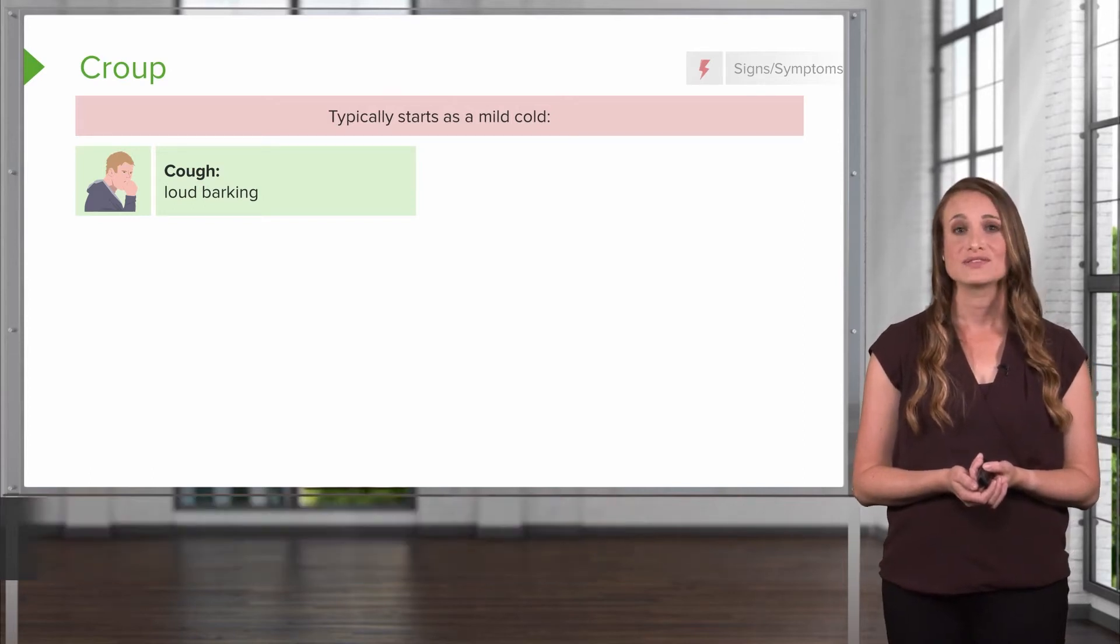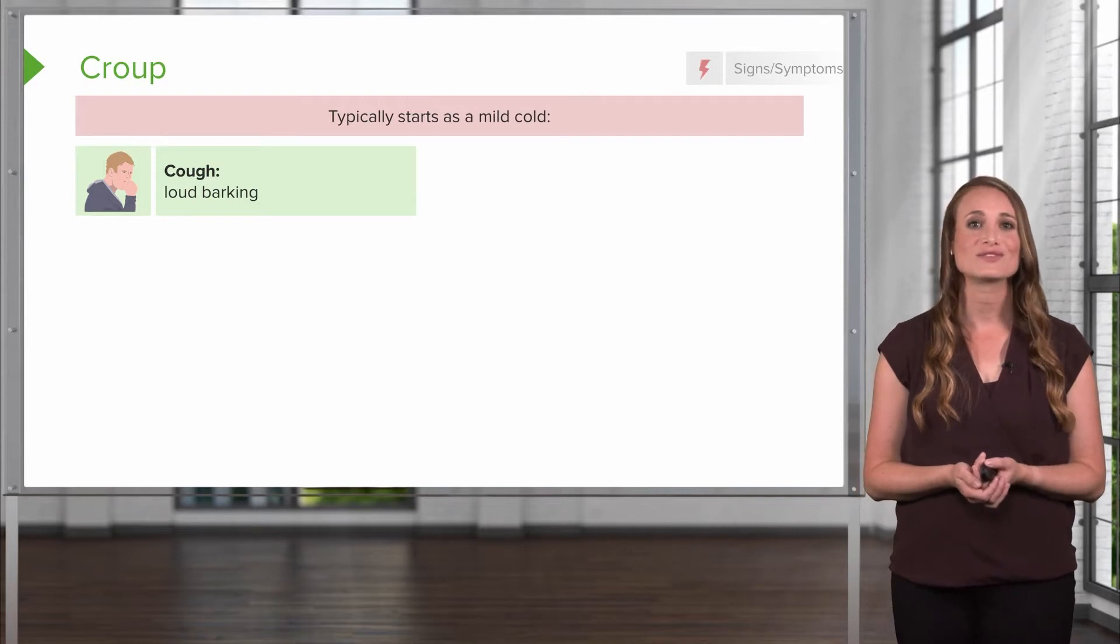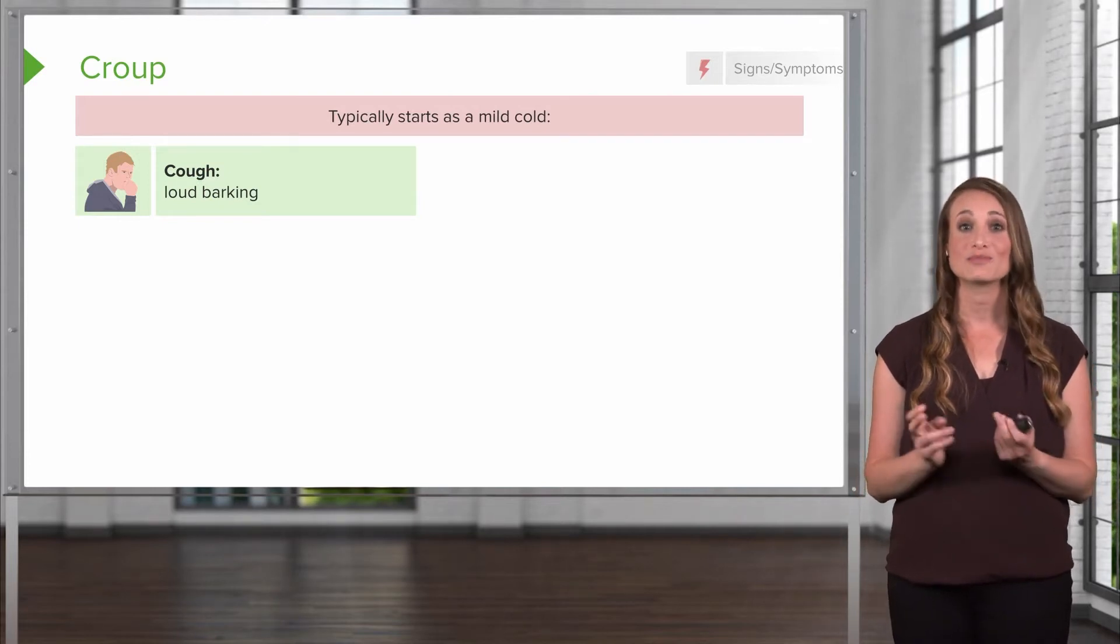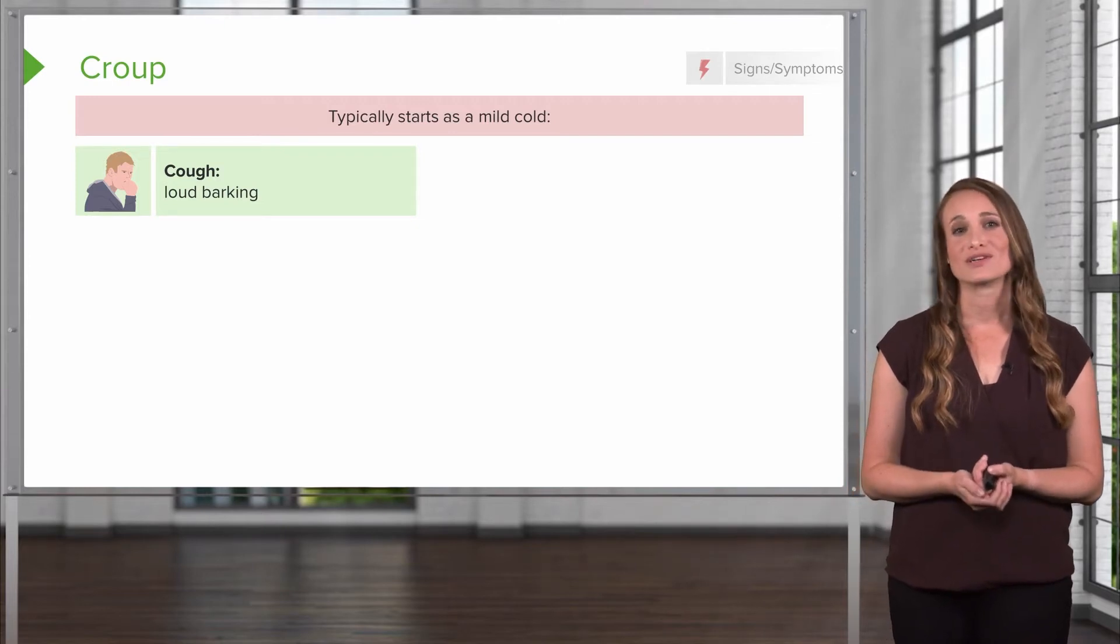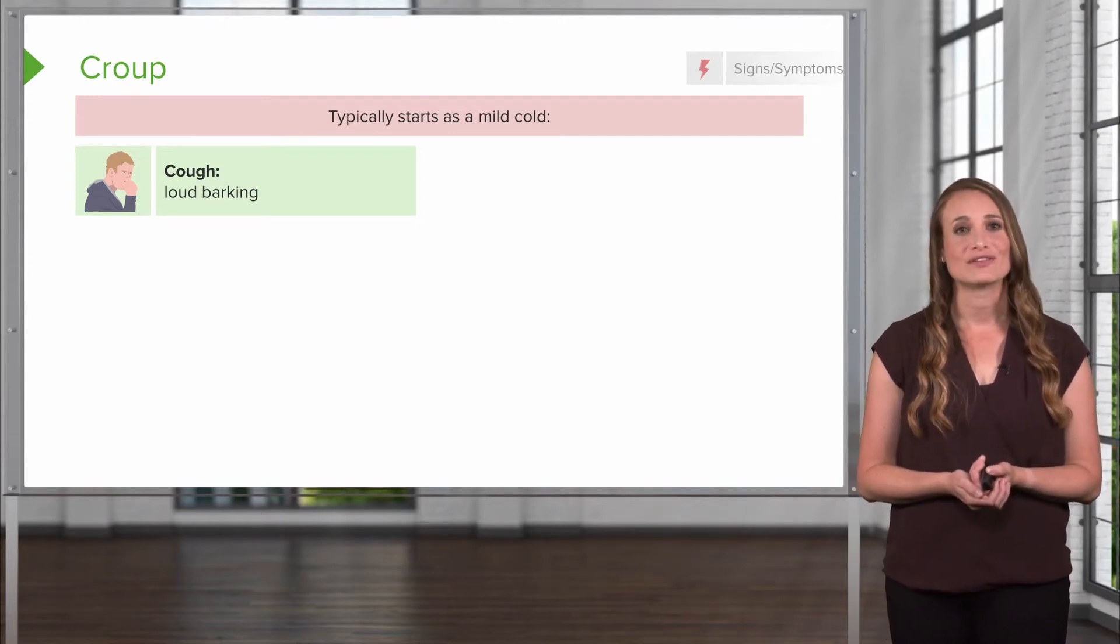The cough associated with croup is very characteristic, and the parents will often say that their child has a croupy cough when they bring them in for care. It sounds like a barking or seal-like cough, and you'll know it when you hear it.